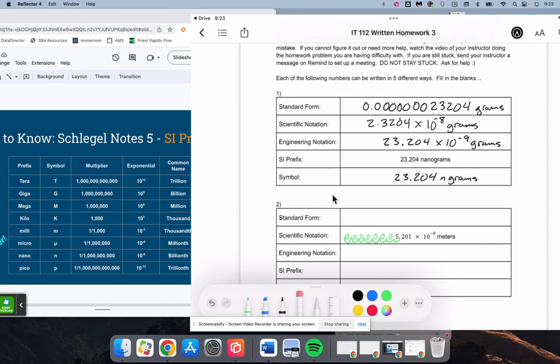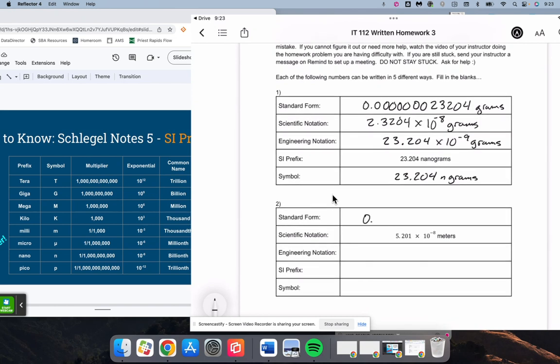So just like the first one. So we've got zero point one, two, three, four, five, six, seven zeros, five, two, zero, one meters.